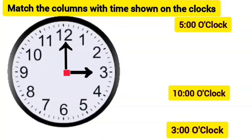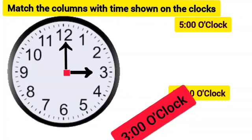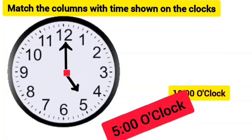In the next clock, the shorter hand is on 3 and the longer minute hand is on 12. This shows the time of 10 o'clock.